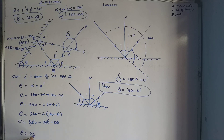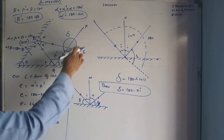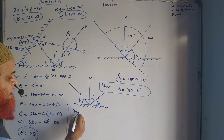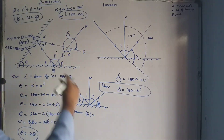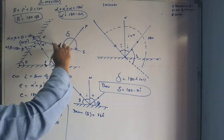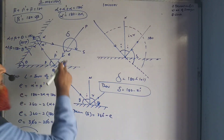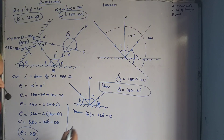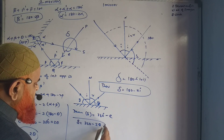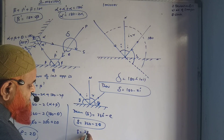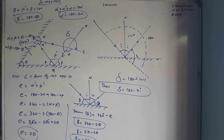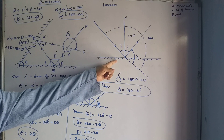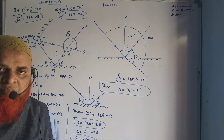So e equals 360 minus 2(180 minus theta), which expands to 360 minus 360 plus 2 theta, giving e equals 2 theta. Now, the deviation delta: the total angle is 360 degrees, so delta equals 360 minus e. Therefore delta equals 360 minus 2 theta, which can also be written as delta equals 2(pi minus theta). This is the formula for deviation because of two mirrors, and delta equals 180 minus 2i is the formula for a single mirror.